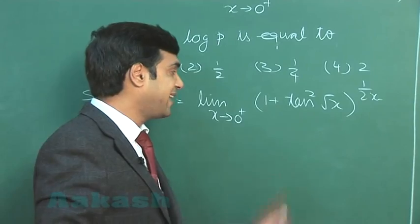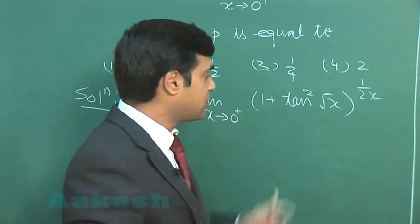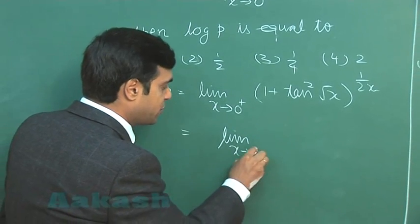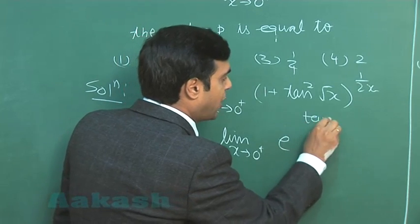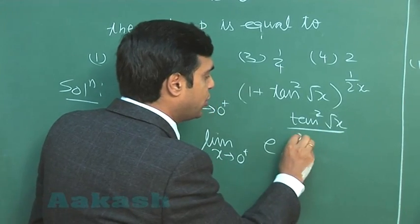On substituting limit, we can see it is approaching like 1 plus 0 raised to the power infinity form. So simply it can be written as limit x approaching 0 plus e raised to the power tan√x divided by 2x.